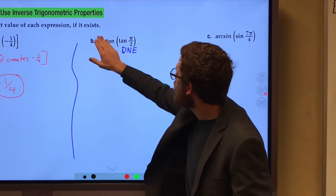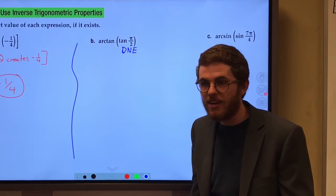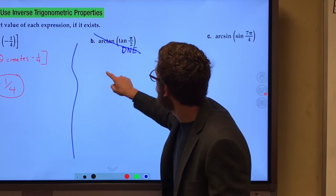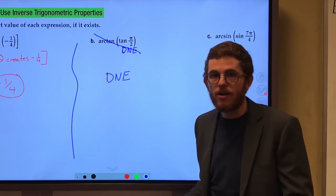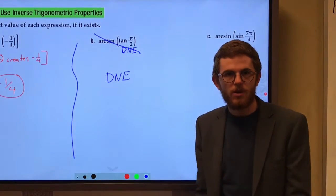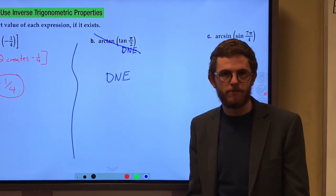And so, the arctan of does not exist. This does not exist. Because we had an error in there, it's done.